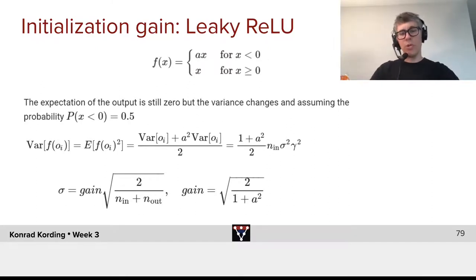The expectation of the output here will generally be zero, but the variance changes. Assuming that the probability P(x < 0) = 0.5, it just means that instead of seeing a positive activation, we could just as well see the negative activation.